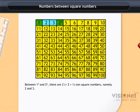Between 1 square and 2 square, there are two non-square numbers, namely 2 and 3. Or we can say that there are 2 × 1 non-square numbers between the two square numbers 1 and 4.